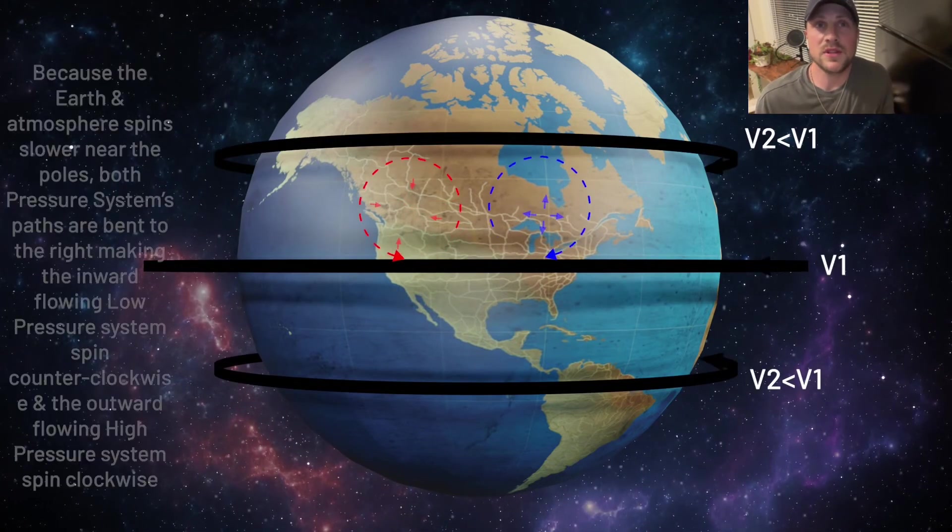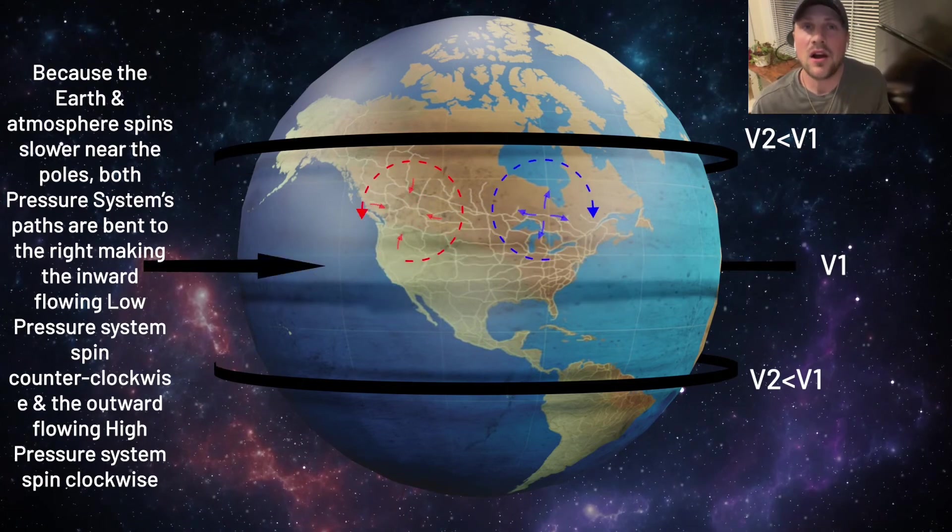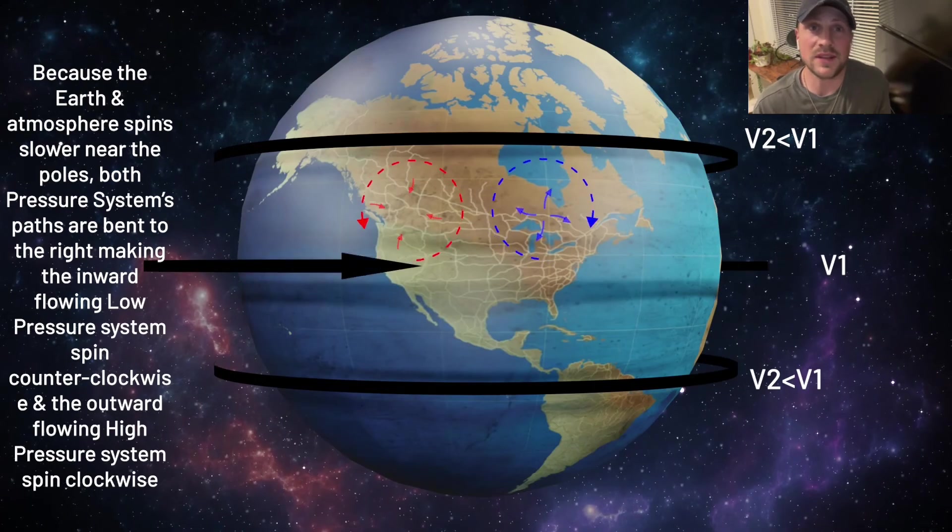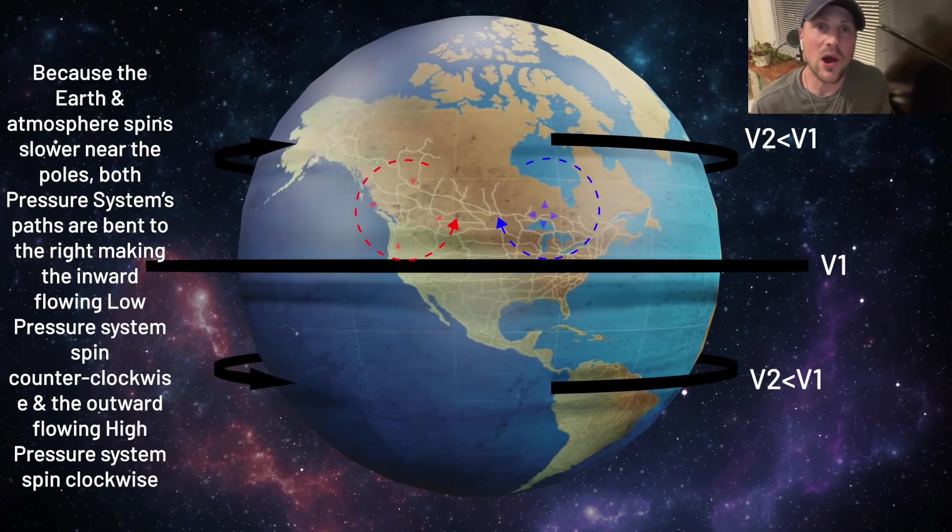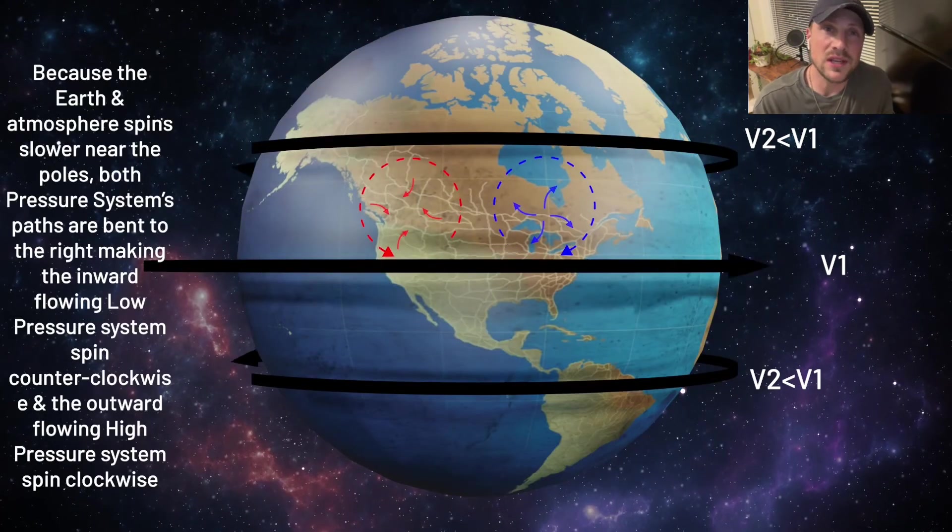Because the earth and atmosphere spins slower near the poles, both pressure systems paths are bent to the right, making the inward flowing low pressure systems spin counterclockwise, and the outward flowing high pressure systems spin clockwise, like you see in this animation.